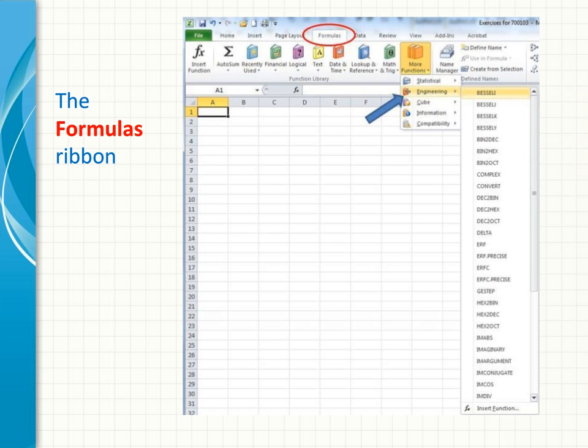There are around 400 functions in Excel, and fortunately they're grouped into various categories, so that we can narrow down fairly quickly what we're looking for.